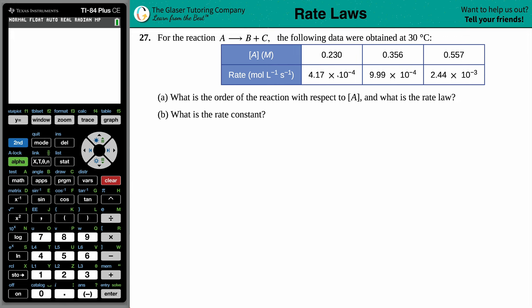Number 27. For the reaction A yields B plus C, the following data were obtained at 30 degrees Celsius. So we have a chart here explaining that the changes in A's concentration, molarity's concentration, will give changes in the rate. It seems like as you are increasing concentration, that rate is actually increasing. So it's following the general trend of if you have more concentration of something, the rate of a reaction will generally increase.